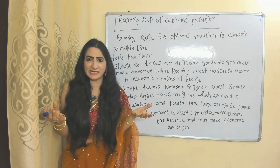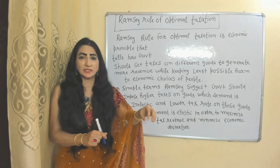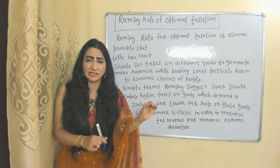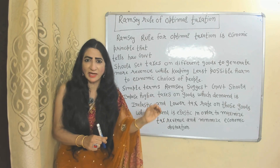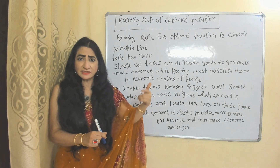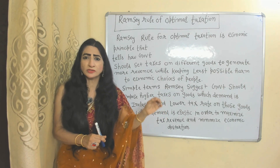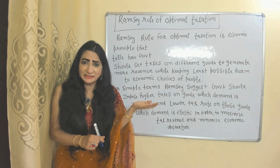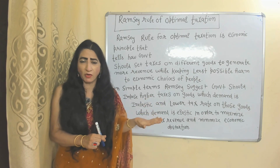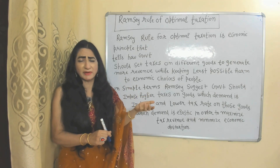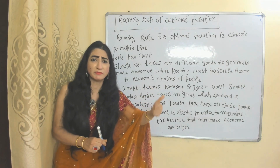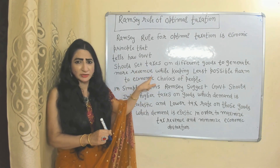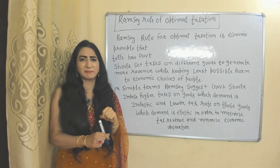Ramsey says the government should impose higher taxes on those goods which demand is inelastic, and lower taxes on those goods which demand is elastic, in order to maximize tax revenue and minimize economic distortion. In short, the Ramsey Rule of optimal taxation is an economic principle which tells us how the government should impose taxes on different goods to generate more revenue, while at the same time keeping the least possible harm to the choices of people.